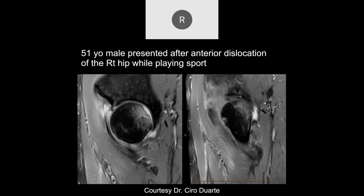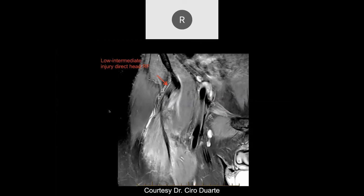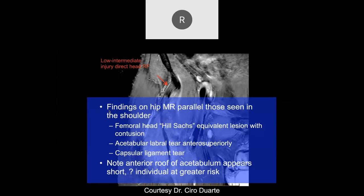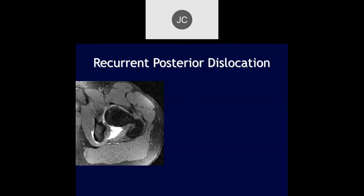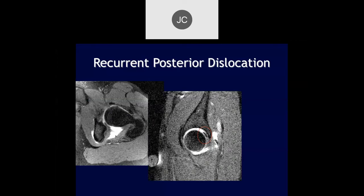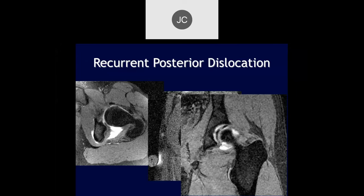51-year-old male presented after anterior dislocation of the right hip while playing sports. There's a lot of edema anterior to the joint space, and posteriorly on the femoral head there's edema with a contour defect and compaction injury — a Hill-Sachs lesion and an anterior labral tear. Also a strain of the direct head of the rectus femoris. In a patient with recurrent posterior dislocations, we can see deficiency of the posterior capsule and displacement of the labrum.